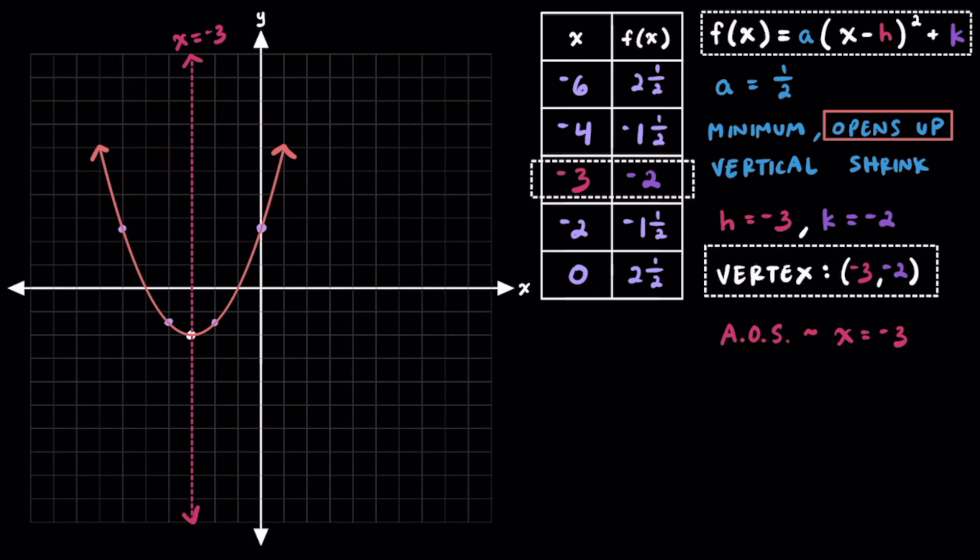And there you have three different examples of graphing quadratic functions when they're written in vertex form. If you found this video helpful, let me know in the comment section below, and you can also help out this channel by giving the video a thumbs up. As always, keep up the great work, and I'll see you in the next one.